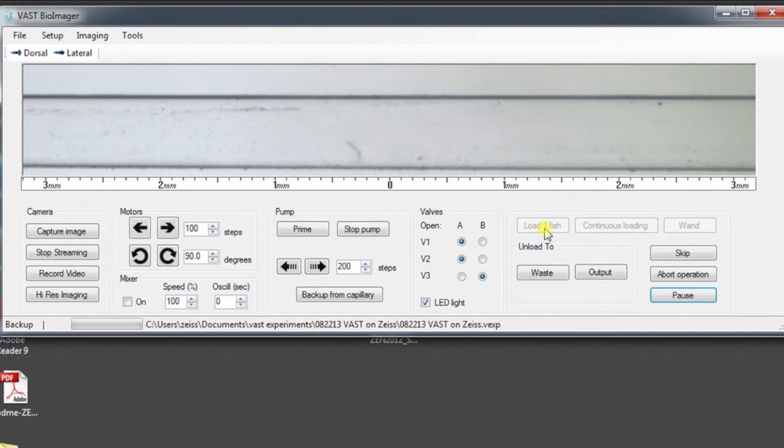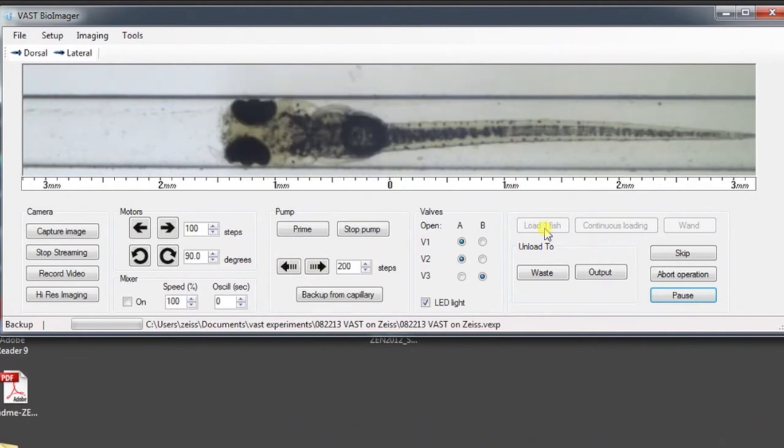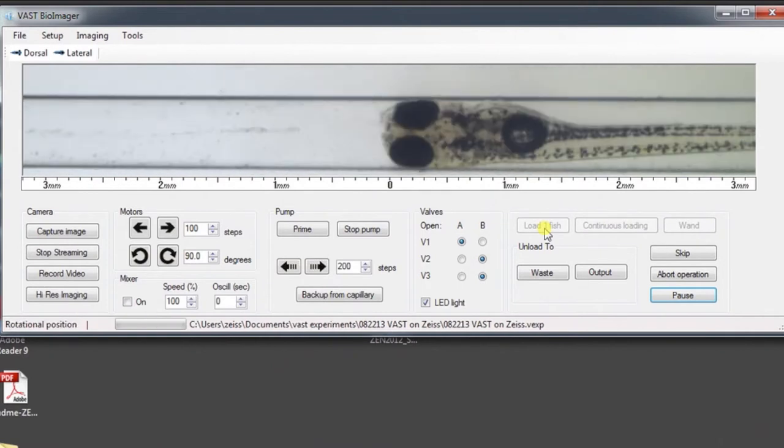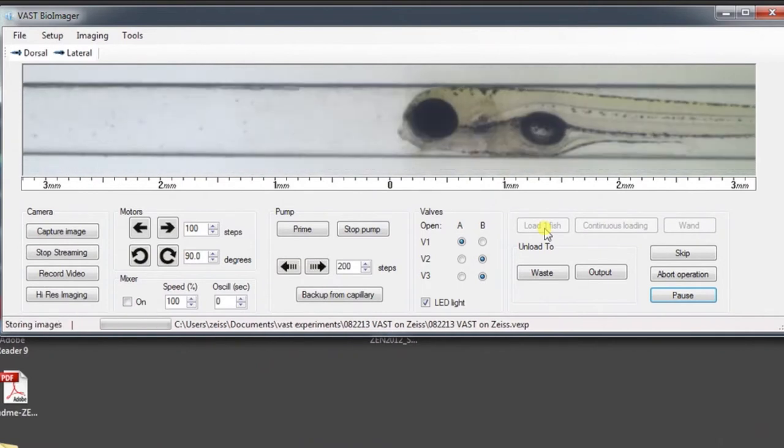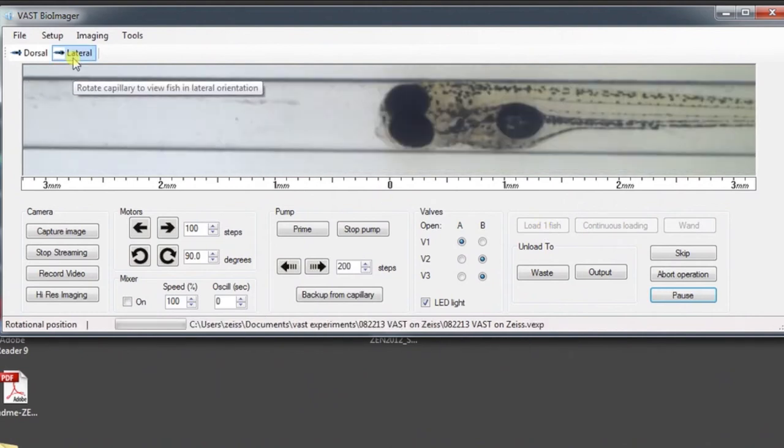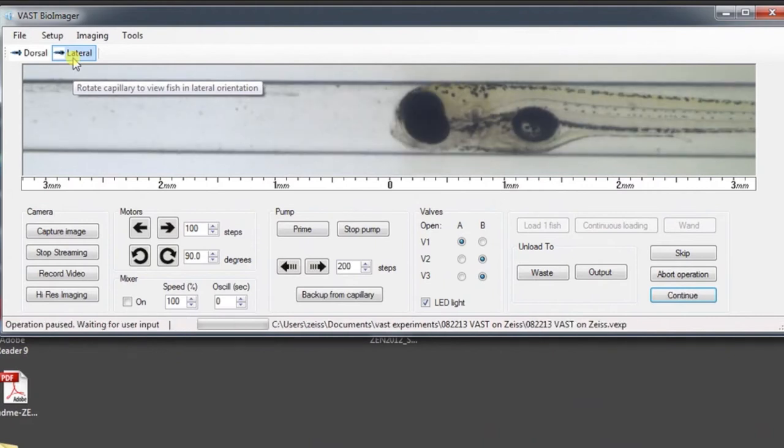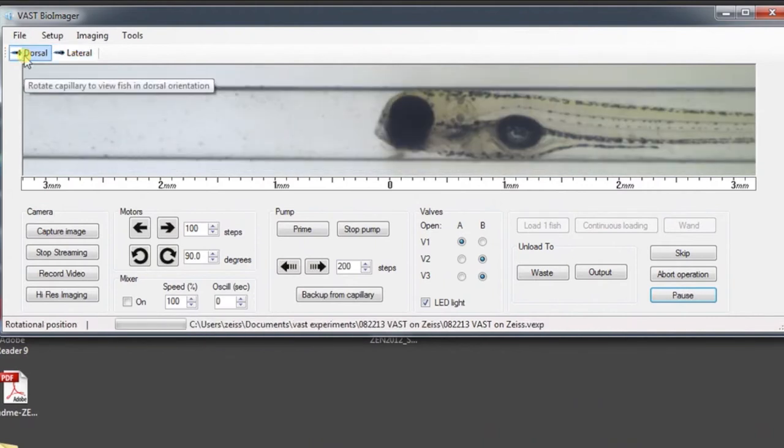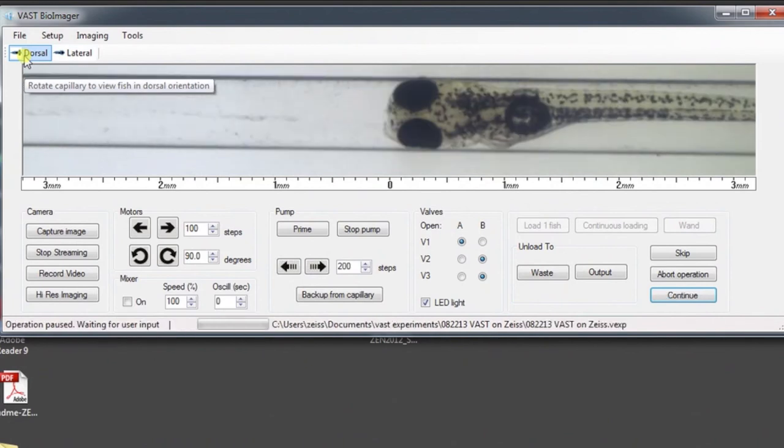To begin, the operator clicks on load one fish. VAST loads one larva and positions it laterally. The system then rotates the larva 360 degrees to determine the orientation of the fish. The operator can then select the desired orientation, lateral, dorsal, or any other custom orientation for image capture.